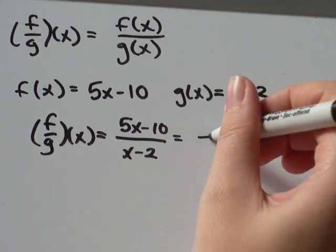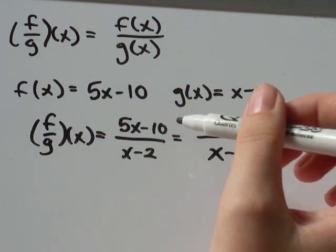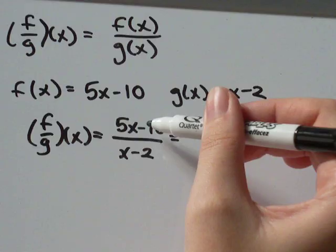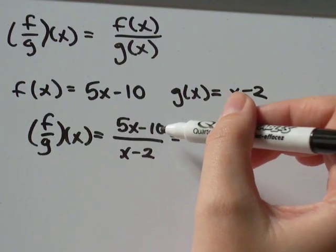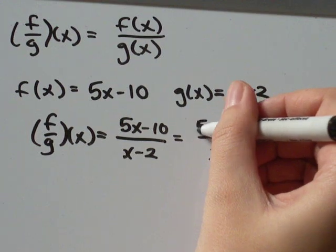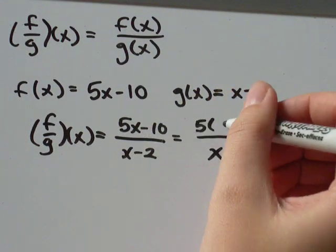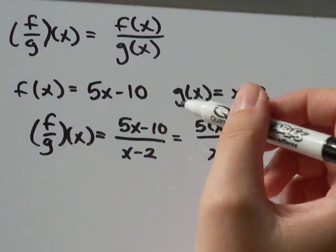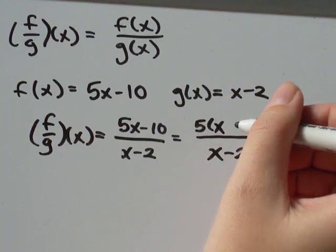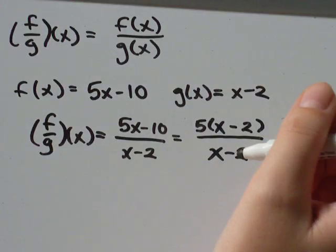And what I'm going to do, I'm not going to do anything with my x minus 2 on the bottom yet, but I notice I've got 5x minus 10, 5 and 10, they're both divisible by 5, so that's what I'm going to do, divide them by 5. So if I take 5x and I divide it by 5, I just get x. If I take negative 10 divided by 5, negative 10 divided by 5 is just negative 2, and a miracle has occurred.